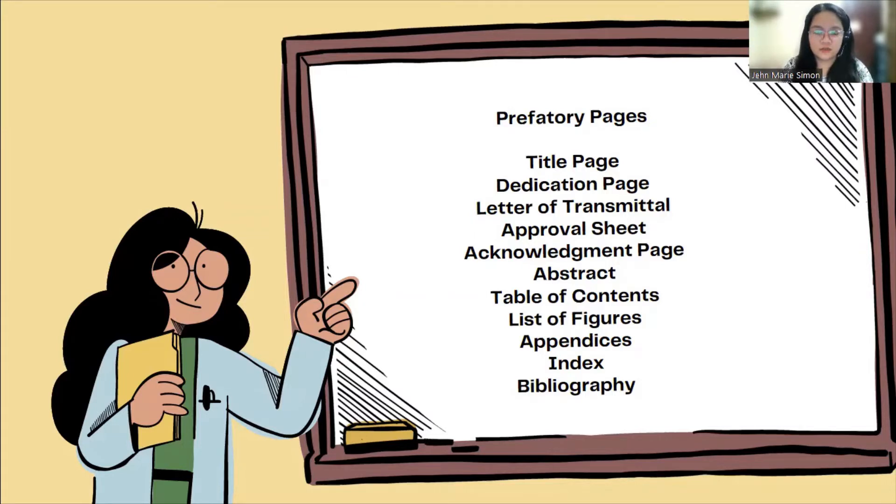This is the approval sheet. The approval sheet includes the name of your school or your organization, your name, and the head of your organization or your school. They approve that you are doing this specific research paper.